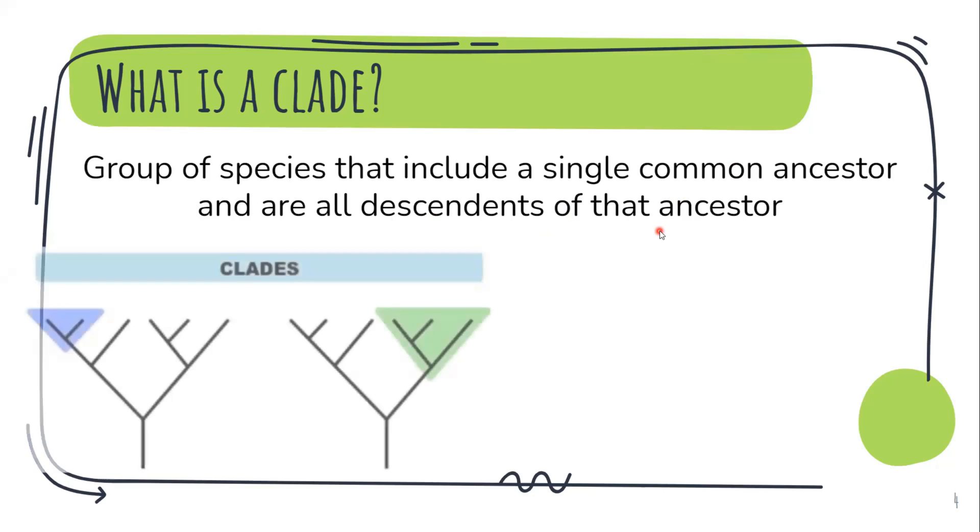Let us take an example. So here we can see the one mark in blue is a clade because these two species have come from this common ancestor. So this is the ancestor and these are its descendants. So this is a clade. Also this is a clade because all of these have come from this common ancestor.